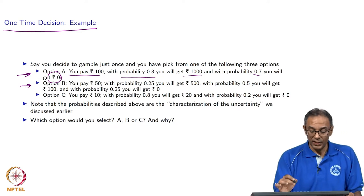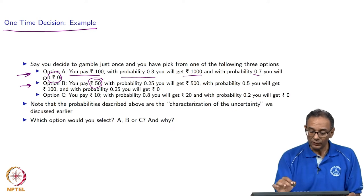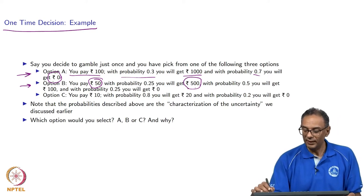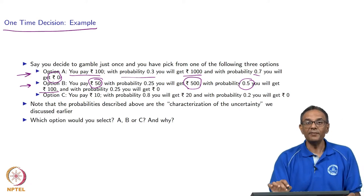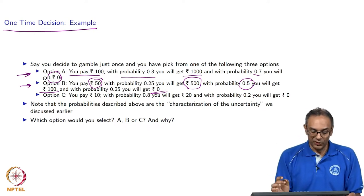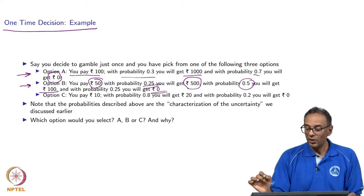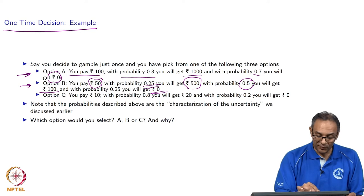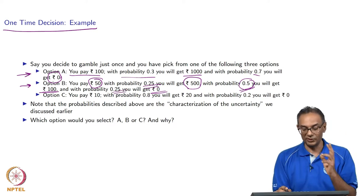Option B: you pay only 50 rupees — a smaller upfront cost. However, there is a 0.25 chance you get 500 rupees, a 0.5 chance you get 100 rupees, and a 0.25 chance you get 0. In other words, you could gain 450 rupees with probability 0.25, gain 50 rupees with probability 0.5, or lose 50 rupees with probability 0.25.